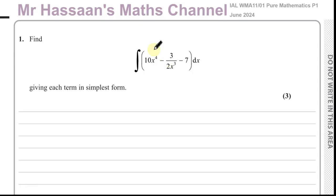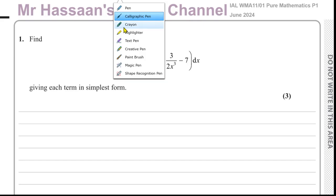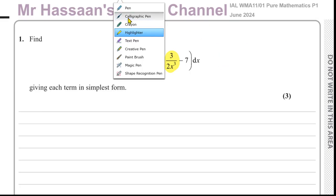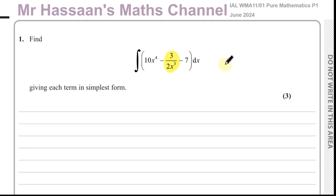Here we have this integral. We've got to integrate with respect to x whatever's inside this bracket. Before we start to integrate this, we have to prepare each term for integration. The term that is not quite ready to be integrated the way it is written down is this term over here. We have to rewrite this such that we can integrate it.